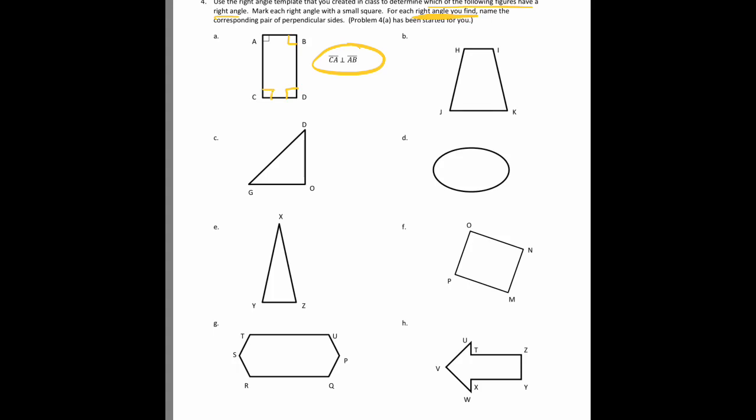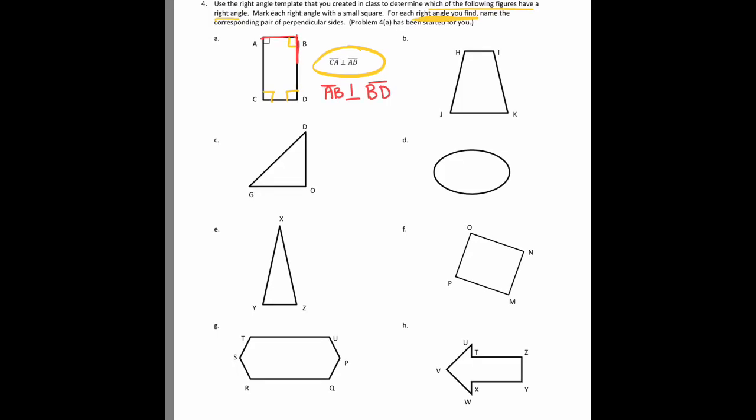And here I have one at ABD, BDC, and DCA. And so I'm going to highlight all the different perpendicular sides with red so I can label them. So I have segment AB is perpendicular to BD. I also have that side BD is perpendicular to CD. And then this last one is CD is perpendicular to AC.